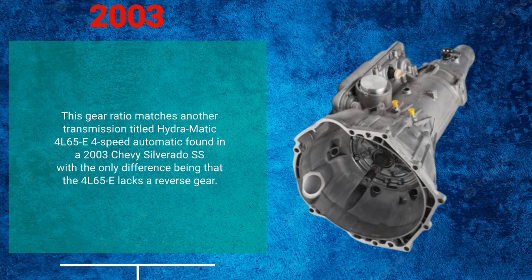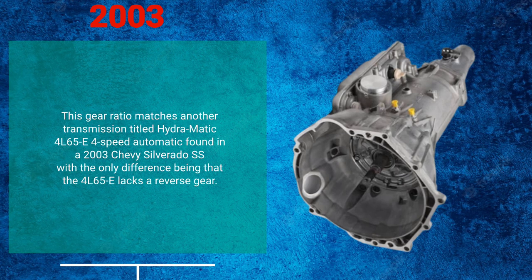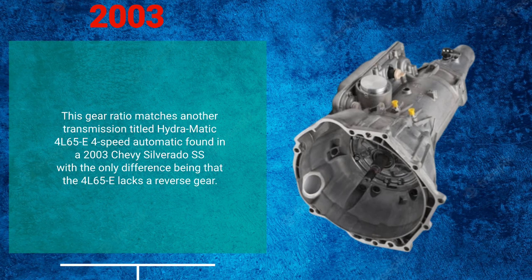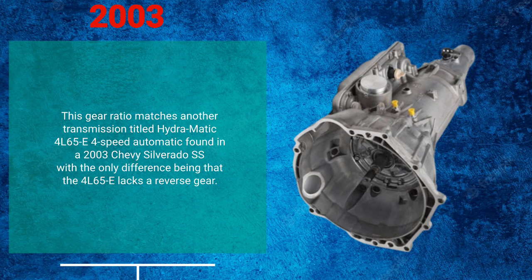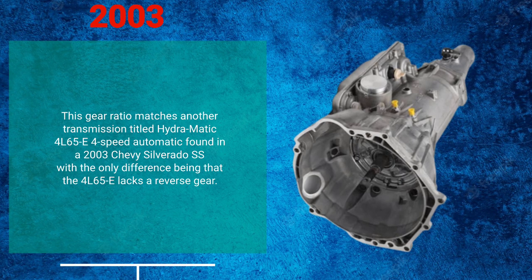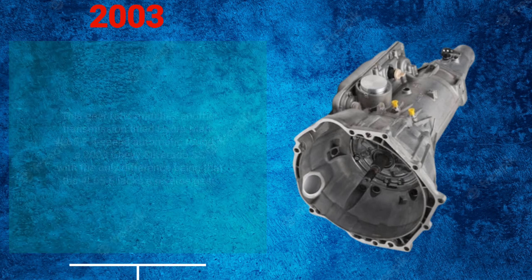Again, this gear ratio matches another transmission titled Hydromatic 4L65E 4-Speed Automatic found in a 2003 Chevy Silverado SS, with the only difference being that the 4L65E lacks a reverse gear.